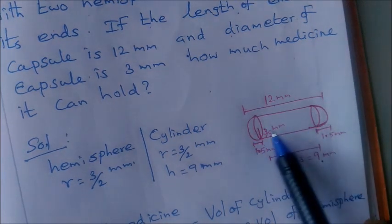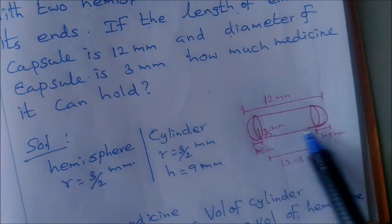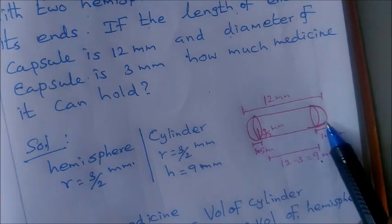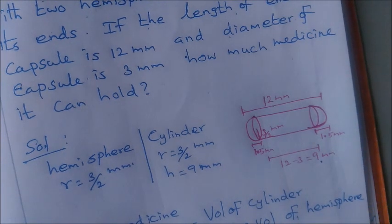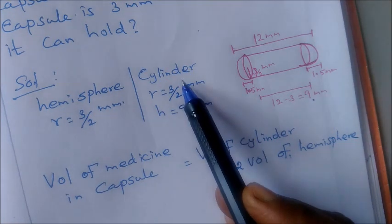So now here are 2 shapes. Volume of medicine, the capacity of medicine. The height of the cylinder is 9 mm. So volume of cylinder plus 2 volume of hemisphere. That is the formula. 2 shapes are the hemisphere and cylinder.